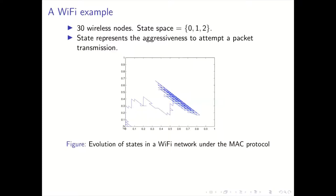What we see here is the evolution of the states in this system under the medium access control protocol. In this picture, the x-axis shows the fraction of nodes in state 0, y-axis shows the fraction of nodes in state 1, and the remaining fraction is in state 2, which is not shown. This example is constructed in such a way that there are two stable equilibria, one near the origin and one near this point, 0.5, 0.5.